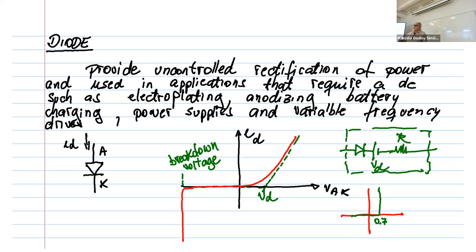For example, LT Spice is one product, and PLECS is another that's very good for this kind of evaluation. A diode provides what we call uncontrolled rectification — it is 'uncontrolled' because you have no direct command to make it on or off. It depends entirely on the voltage being higher at the anode than the cathode. So it's an uncontrolled rectifier.